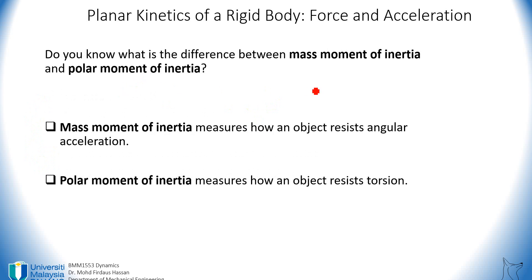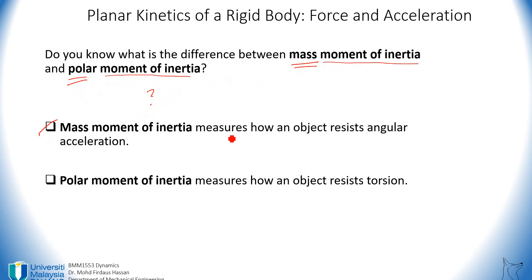When you search in Google or in books, you'll find two terms: mass moment of inertia and polar moment of inertia. The difference is that mass moment of inertia — which is what we are going to learn in this chapter — is a measure of how an object resists angular acceleration, denoted by alpha. The polar moment of inertia, on the other hand, is a measure of how an object resists torsion.